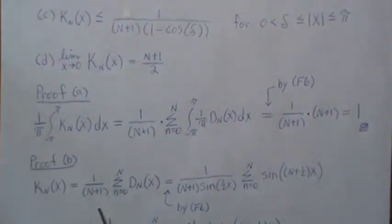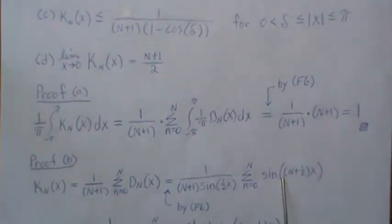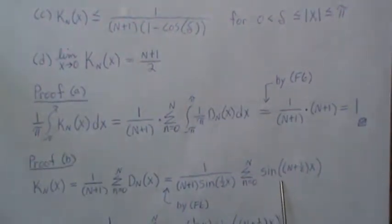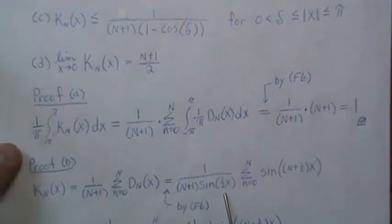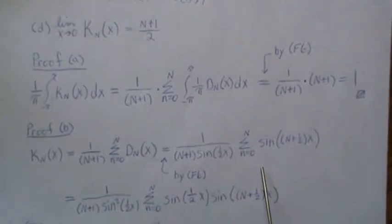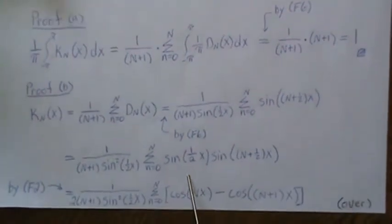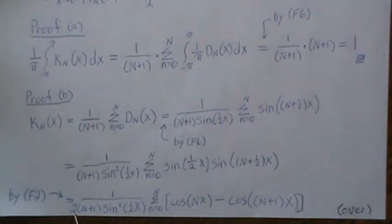For the proof of property B, we have the Fejér kernel replaced by the Cesàro sum of Dirichlet kernels. We previously proved that the Dirichlet kernel equals a specific expression. I take out the factor not indexed by n from the sum. We then want to introduce another sine term so we can use a trig identity — we multiply and divide by sine of one-half x. The product of sines can be represented as a difference of cosines, as shown in an earlier video.